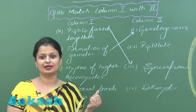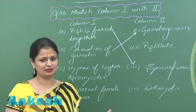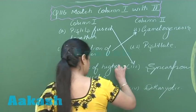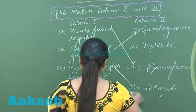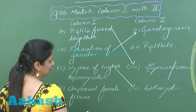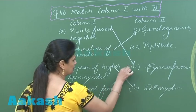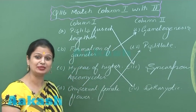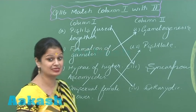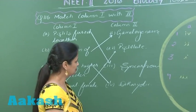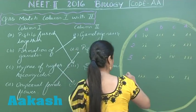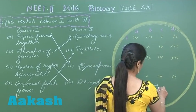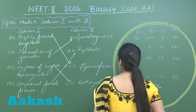The dikaryotic mycelium is also known as secondary mycelium, so that is the right option. A unisexual female flower is known as pistillate, and if it were male, you would call it a staminate flower. So the right option for question 116 is option number four.